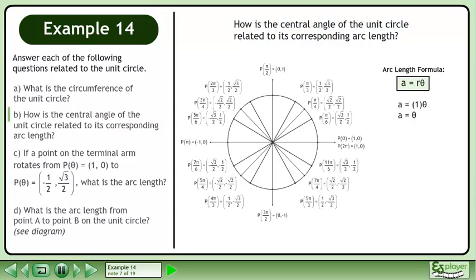The radius of the unit circle is 1, so plug this in for r. The result is a equals θ. The length of an arc on the unit circle has the same numerical value as the angle that forms the arc.